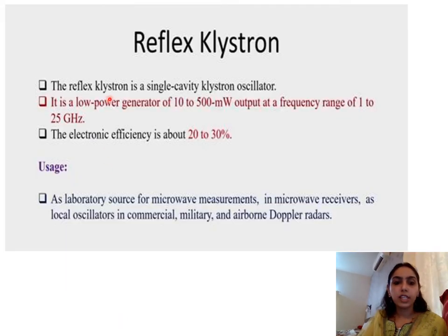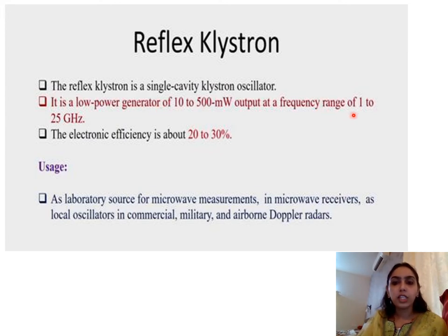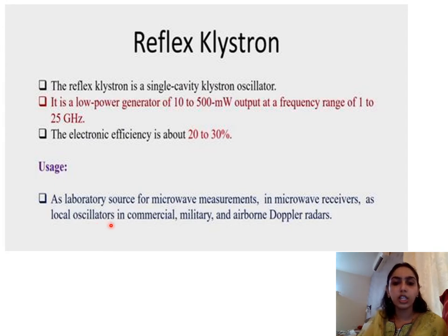Reflex klystron is a single cavity klystron oscillator. Its features and usage: the efficiency is almost 20 to 30 percent. It is a low power generator and cannot generate power of high ranges, with a frequency range of 1 to 25 GHz. It is mainly used in laboratory sources for microwave measurements, in microwave receivers as a local oscillator, and in commercial, military, and airborne Doppler radars.